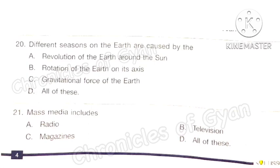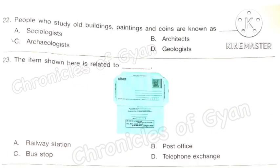Question 21: Mass media includes what? The correct answer is option D: All of these. Question 22: People who study old buildings, paintings, and coins are known as what? The correct answer is option C: Archaeologists.